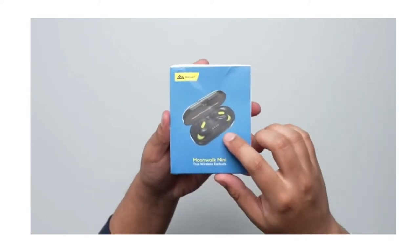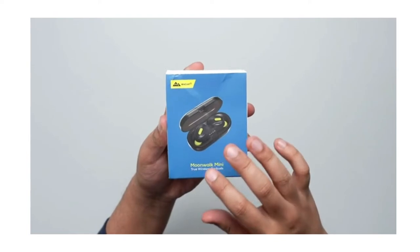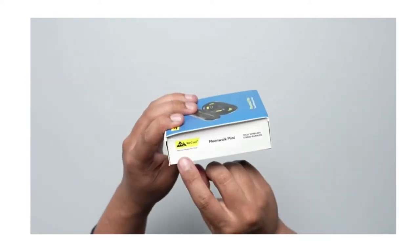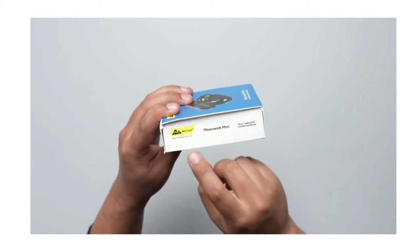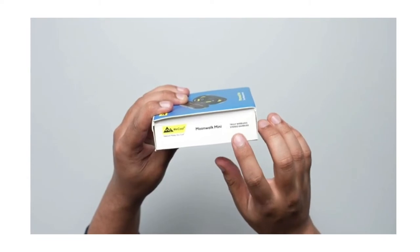On the front side of the box you can see the earbuds which come in a black and neon yellow shade. Towards the side we have this tagline called We Cool Makes You Cool, and also that these are truly wireless stereo earbuds.